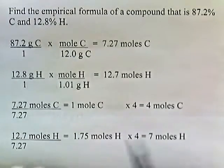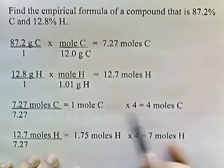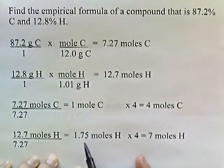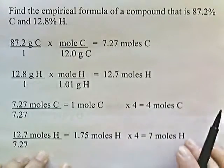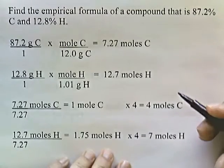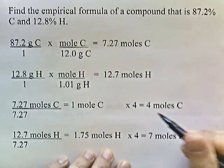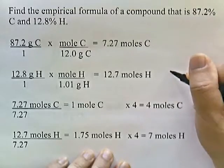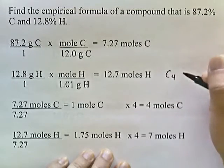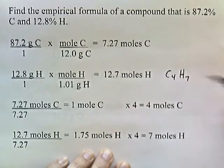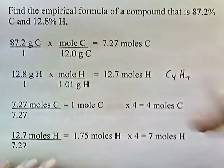So multiply times 4. 1 times 4 is 4. 1.75 times 4 is 7. So the whole number ratio of carbon to hydrogen is 4 to 7. So our empirical formula of our compound is C4H7. That's our answer.